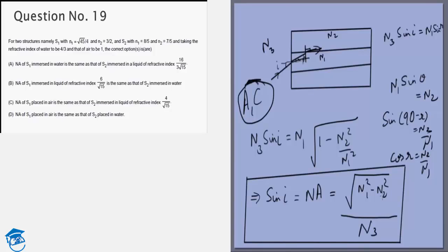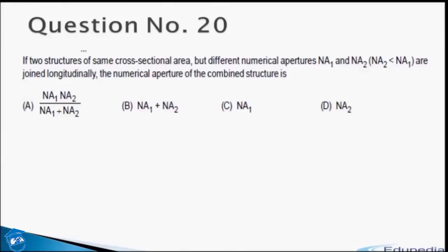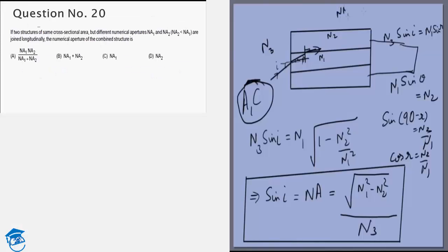Let's look at the very last question. In that question we are given two such tubes which have numerical apertures NA1 and NA2, where we are given that NA2 is less than NA1.